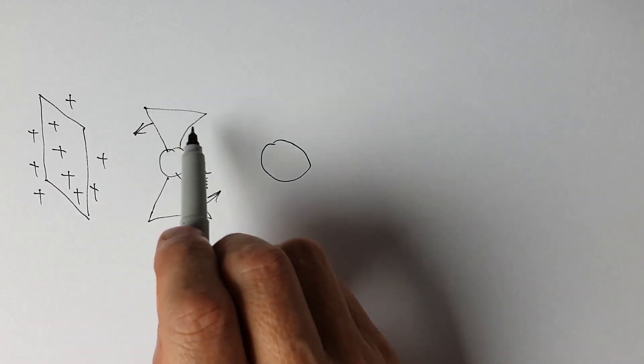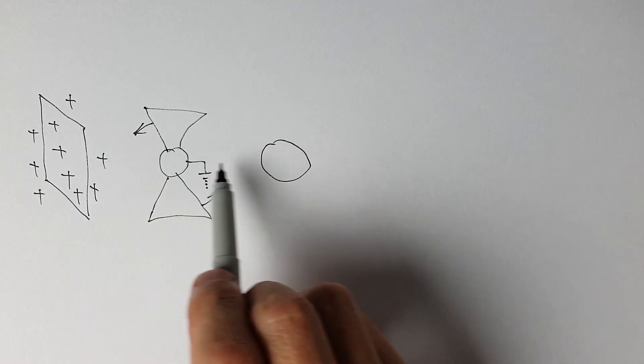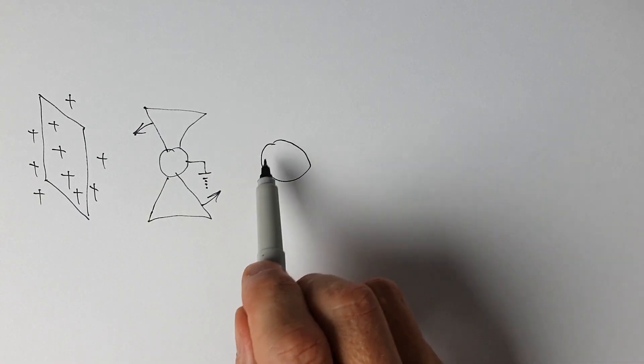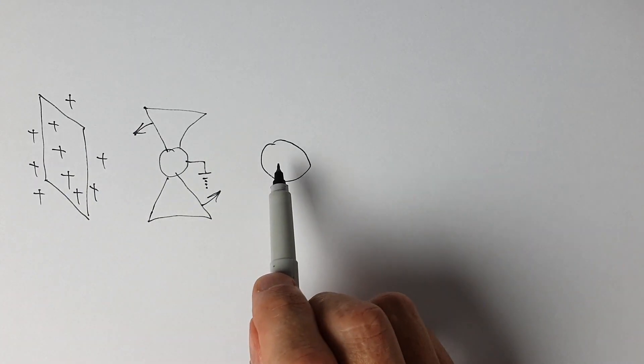One is that the rotating grounded shutter intercepts the electric field lines before they make it to the sensing electrode. Or you can look at it as if it's a variable capacitor.